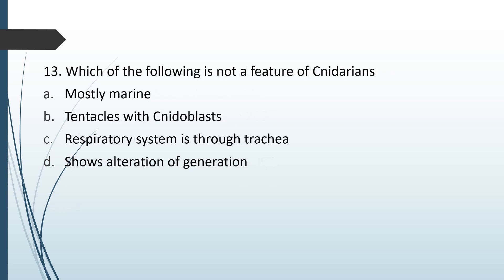Which of the following is not a feature of cnidarians? Mostly marine; tentacles with cnidoblasts; respiratory system is through trachea; shows alternation of generation. The correct answer is option C — respiration through trachea is not a feature of cnidarians.